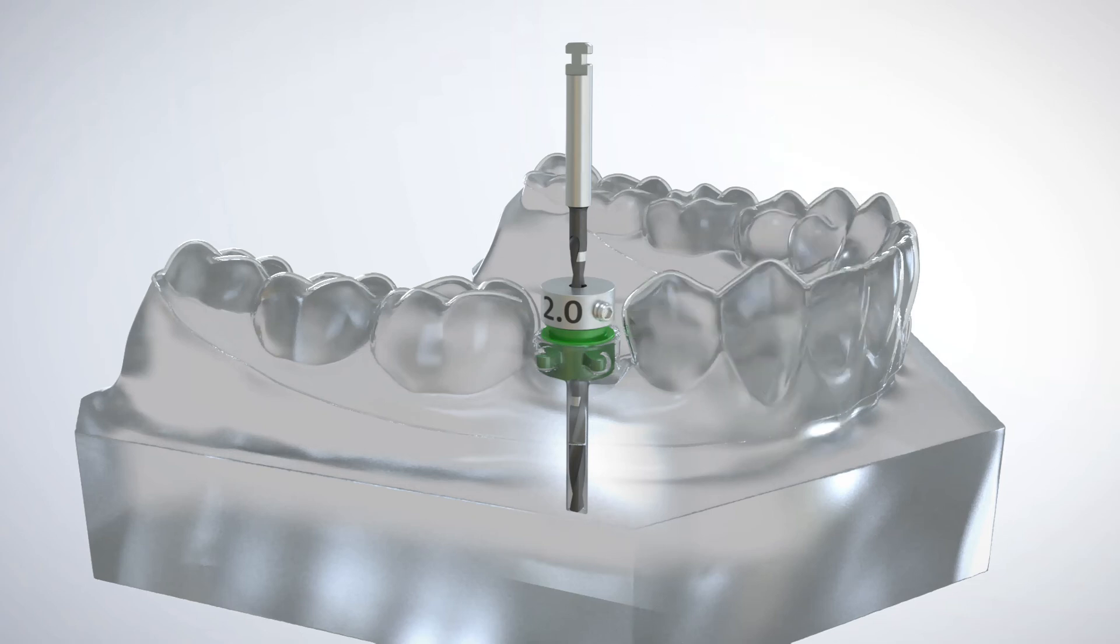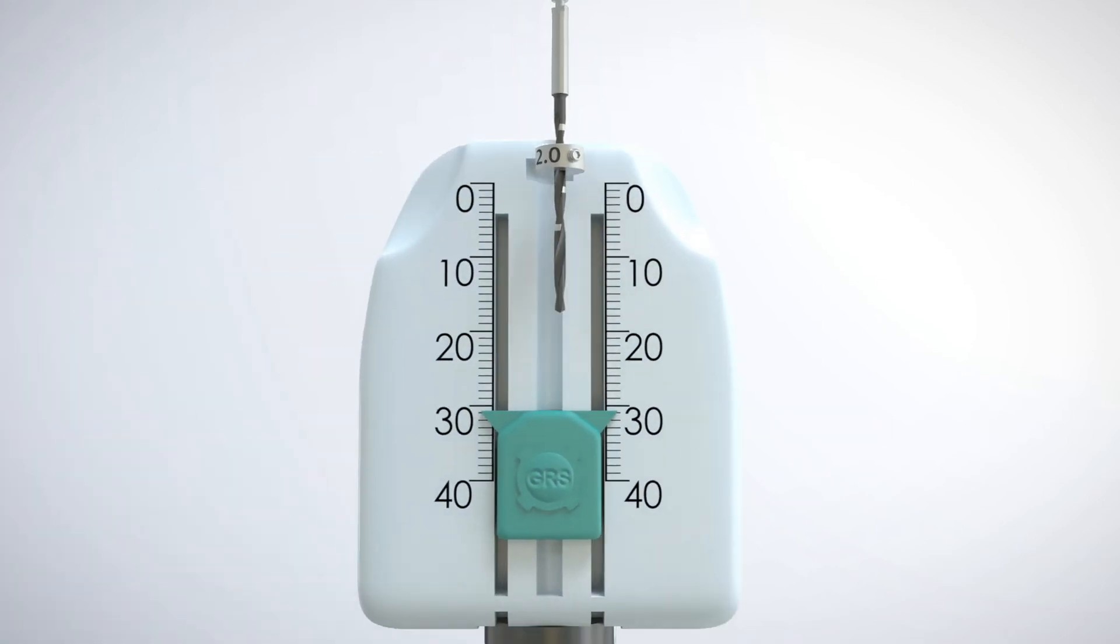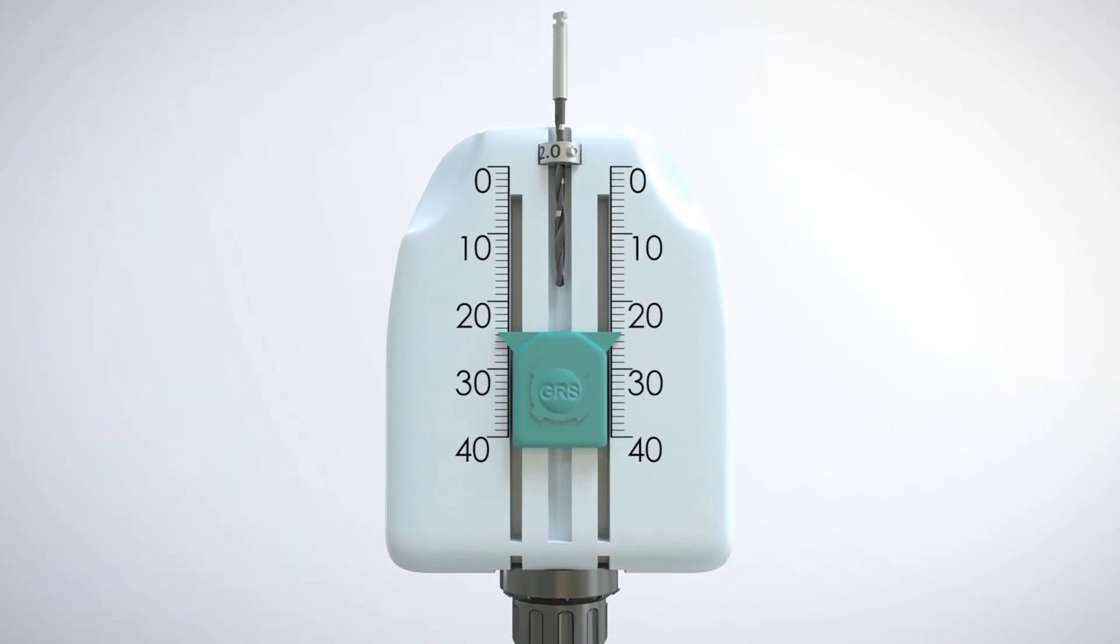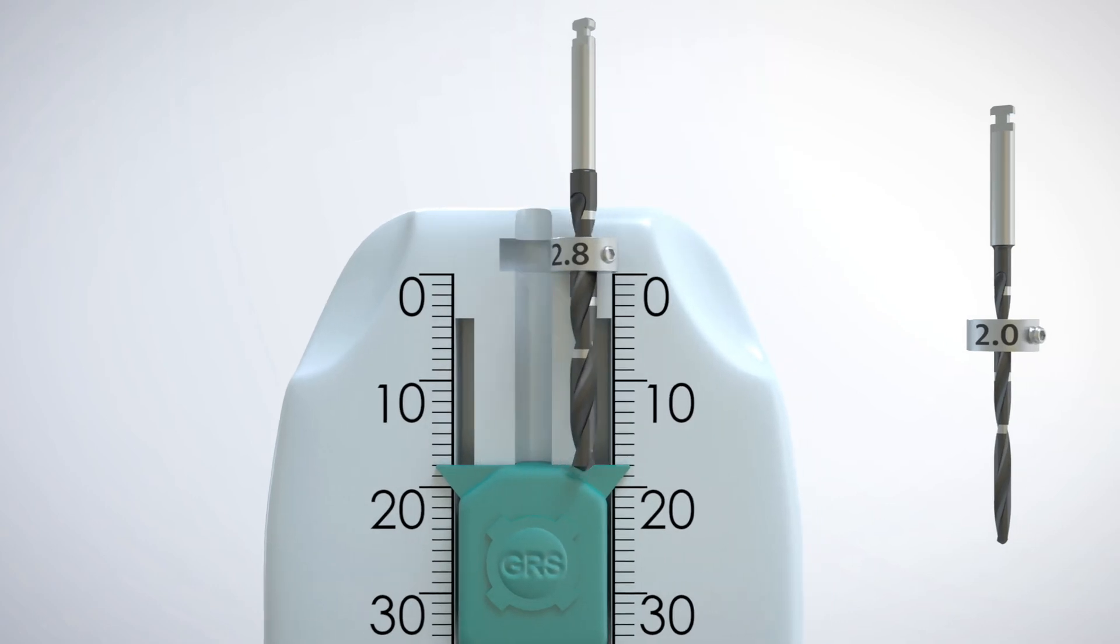The drill is placed into the GRS depth gauge which records the drill depth to an accuracy of 0.1 millimeter. All subsequent surgical drills can be set with drill stops at the same accurate position to ensure precise osteotomy depth.